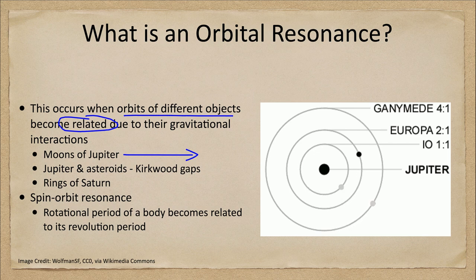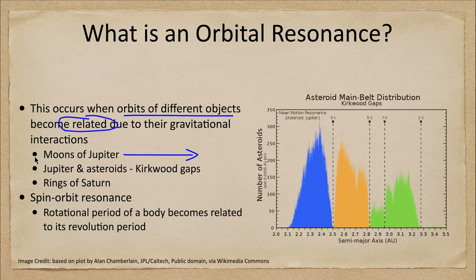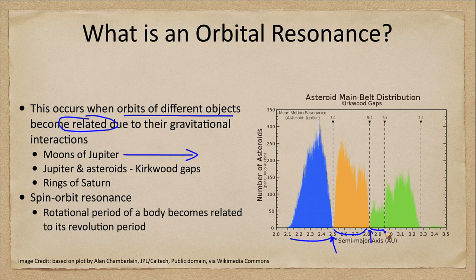Orbital resonances are not limited to things like this. We can also look at the Kirkwood gaps in the asteroid belt. When we plot out the asteroid belt versus distance, we get a big group, then a gap, then another big group, then a gap, and then smaller groups. There are all these specific gaps, and those gaps are related to the orbit of Jupiter. The first major gap has a three-to-one resonance.